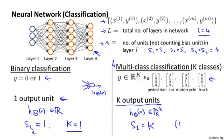And usually we would have K greater than or equal to 3 in this case because if we had two classes then we don't need to use the one versus all method. We need to use the one versus all method only if we have K greater than or equal to three classes. So if we had only two classes, we would need to use only one output unit.